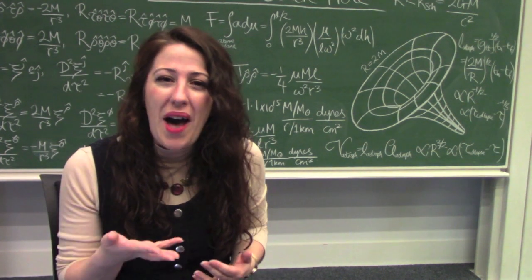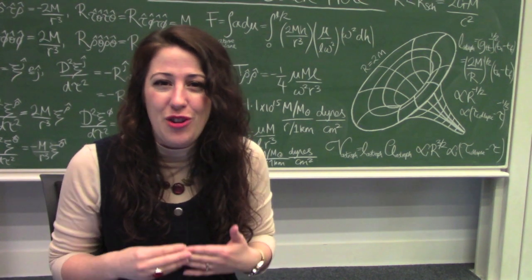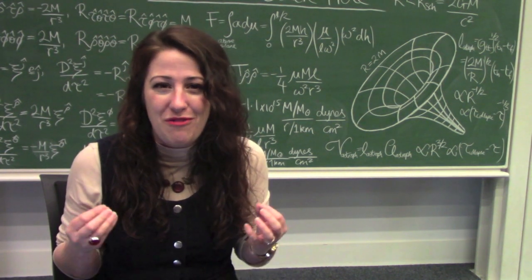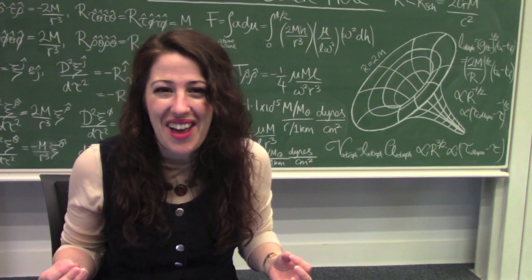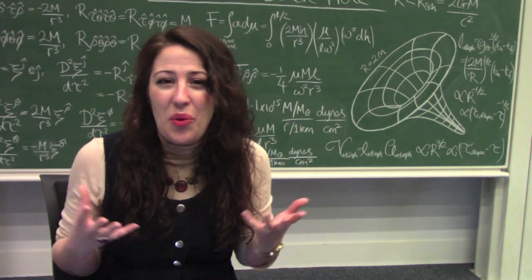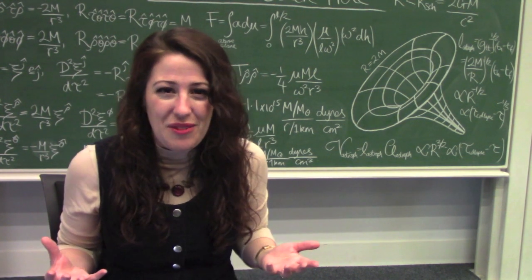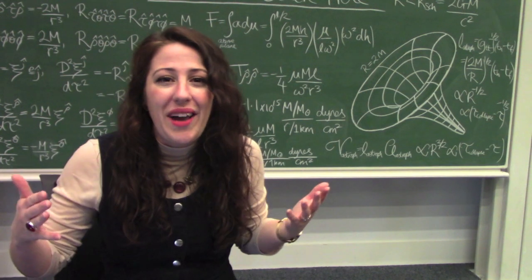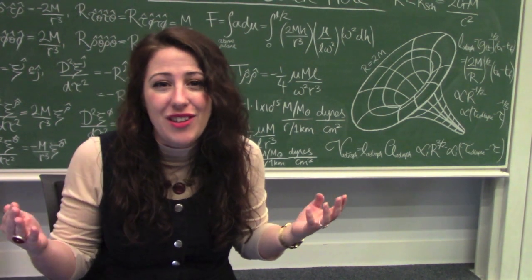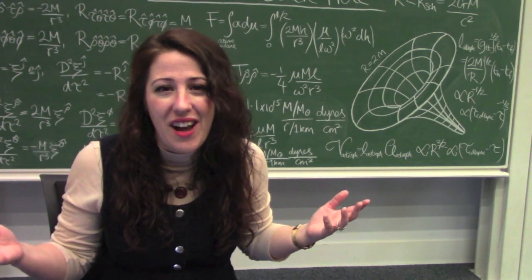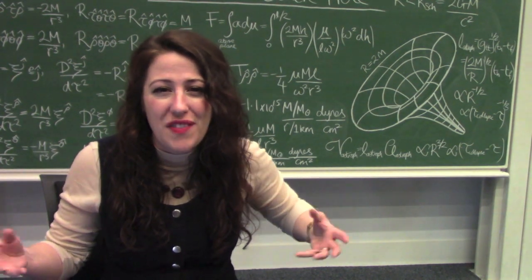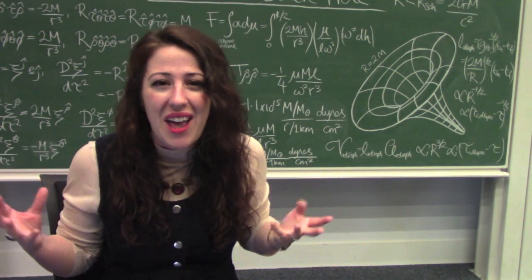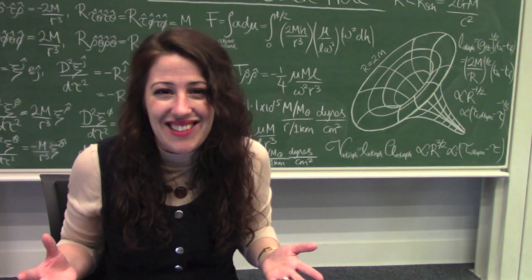But what happens if you cross the event horizon of a supermassive black hole? It's something quite different. As you drift through space, you could quite easily cross the event horizon of one of these enormous black holes and not even realise.